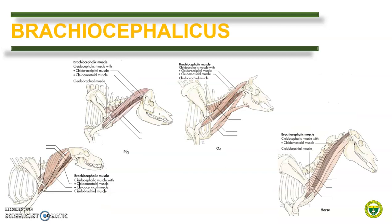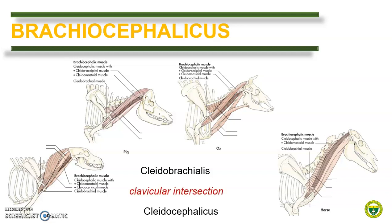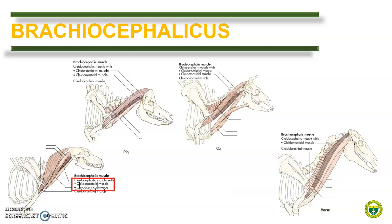Let us begin by differentiating the brachiocephalicus muscle. As we recall, this muscle extends from the arm to the head, thus with the name brachiocephalicus. It is divided into clidobrachialis and clidocephalicus by the clavicular intersection or the remnant of the clavicle. The clidobrachialis remains undivided for all animals. However, the clidocephalicus is divided in some and was renamed based on their insertion. In the dog, the clidocephalicus is further subdivided into clidomastoidus because of its insertion at the mastoid process of the temporal bone, and clidocervicalis because of its insertion at the cervical vertebrae.